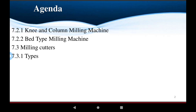The agenda for today's video covers the most important parts of milling machines: knee and column milling machines, bed type milling machines, milling cutters and their types. Operations are performed along the axis, inclined axis, and XYZ axis of the material cutting using multi-point cutting tools.